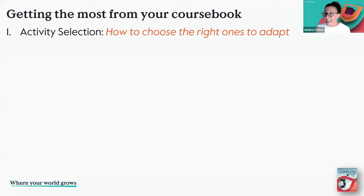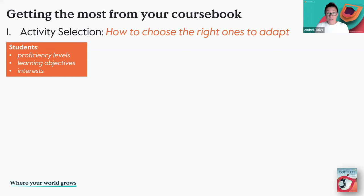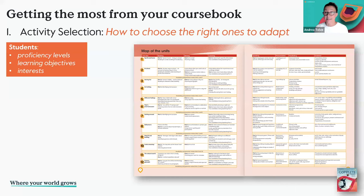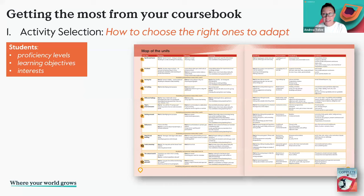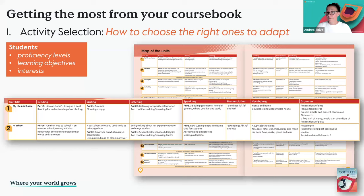These four points can help us make informed decisions about which activities to adapt and how to assess their suitability for our particular classroom. Activity selection: when we're selecting activities from our coursebook to adapt, it's really important to bear in mind our students' proficiency levels, their learning objectives, and their interests. The best place to start is by reviewing the coursebook's table of contents.